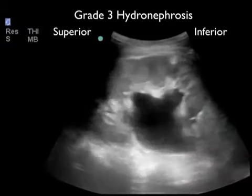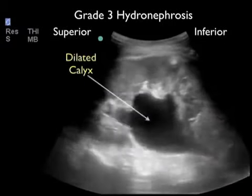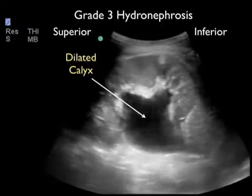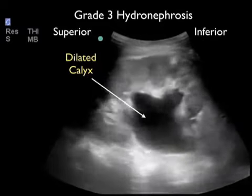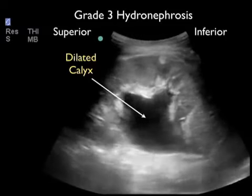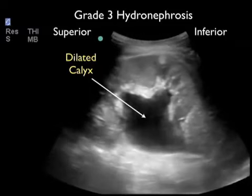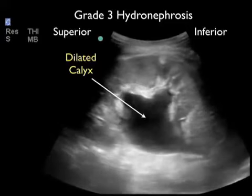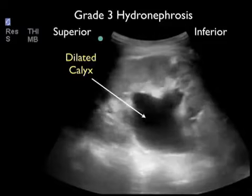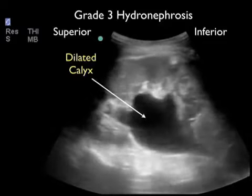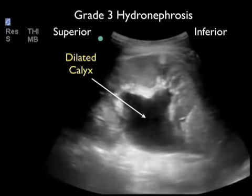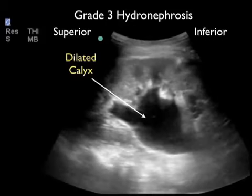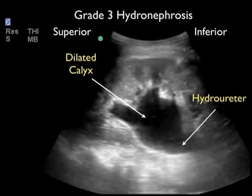Here's an example of the highest grade — severe or grade three hydronephrosis — in a patient who had a 1.5 centimeter kidney stone. Scanning back and forth, we can see that all the medullary pyramids and calyceal region are completely filled with dark anechoic fluid, with only the outer cortex of renal tissue remaining. Unfortunately, this patient had longstanding hydronephrosis with significant loss of kidney function on this side. The dilated calyceal region leads to a very dilated hydroureter, confirming hydronephrosis.